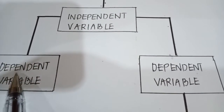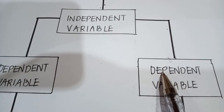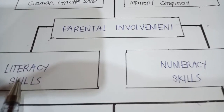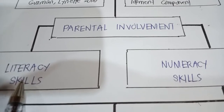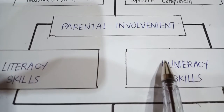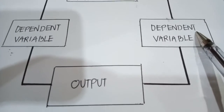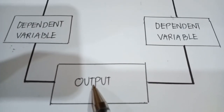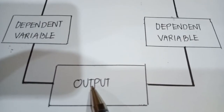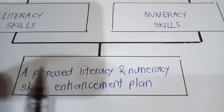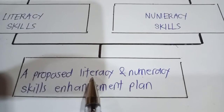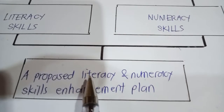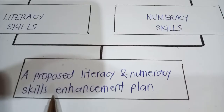Below the independent variable are the two dependent variables. Dependent variable number one is literacy skills, and the second dependent variable is numeracy skills. Finally, the last part of the framework is the output — what we want to do and what our goal is. Our goal or output is a proposed literacy and numeracy skills enhancement plan, which would augment the literacy and numeracy skills of our kindergarten learners. This is the main goal of our study.